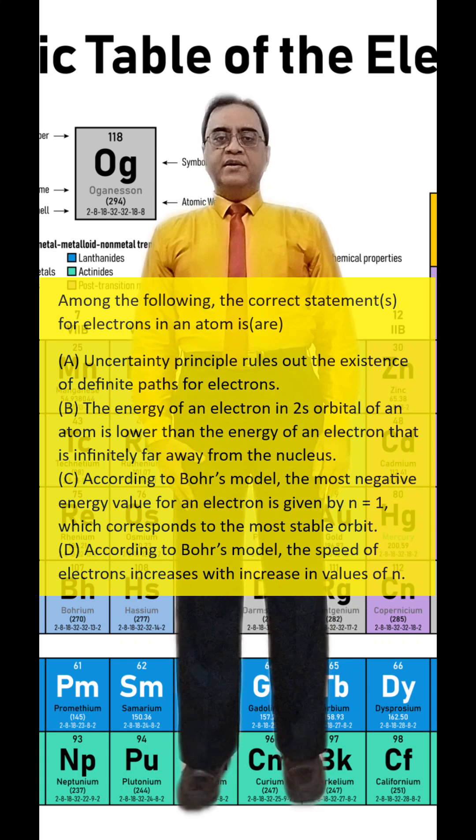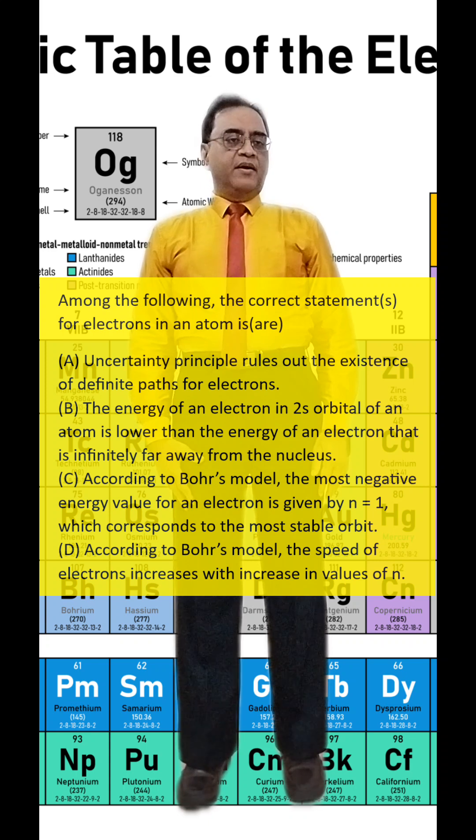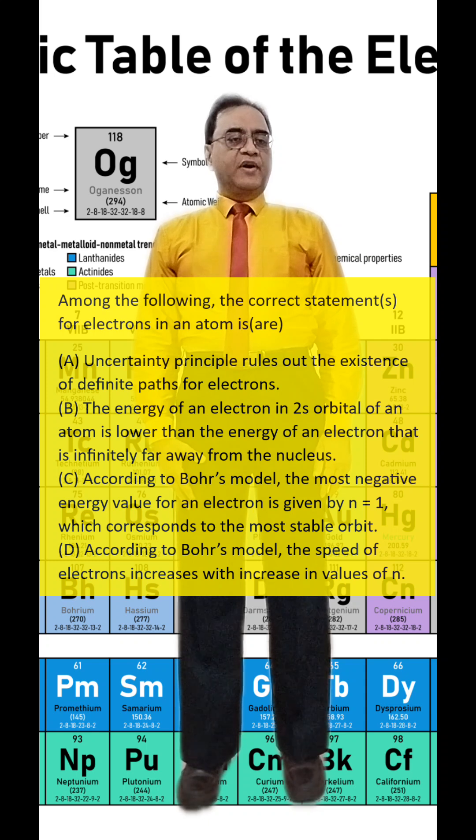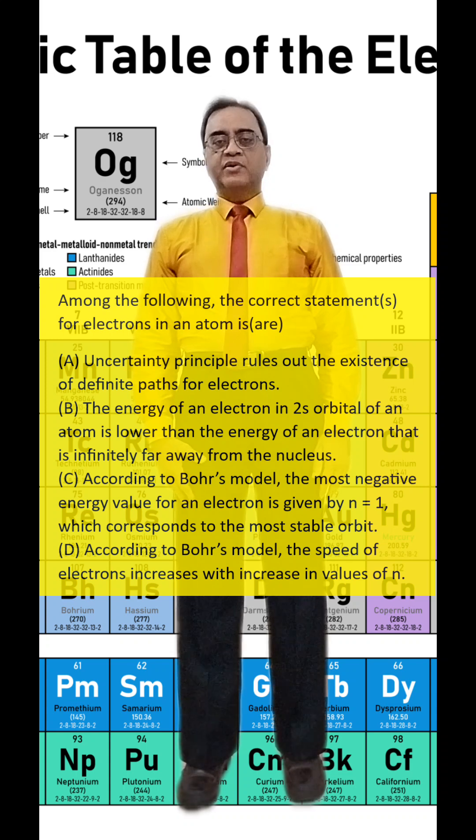Option C is correct. D. According to Bohr's model, the speed of electrons increases with increase in values of n. n equal to 1. Well,